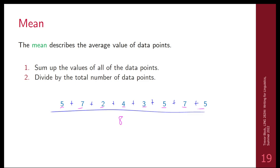So we divide by eight, which gives us a result: adding to 38 and dividing by 8 gives approximately 4.75. You could use a calculator, but really if a computer is not doing it for us, we're just wasting our time.